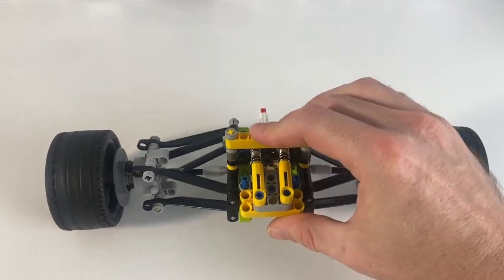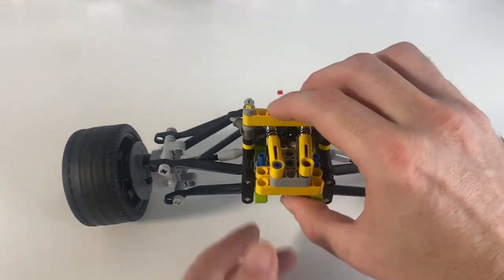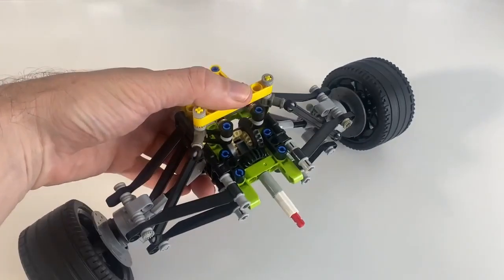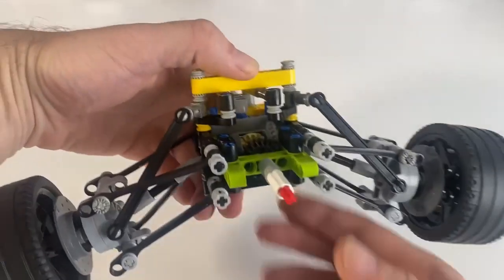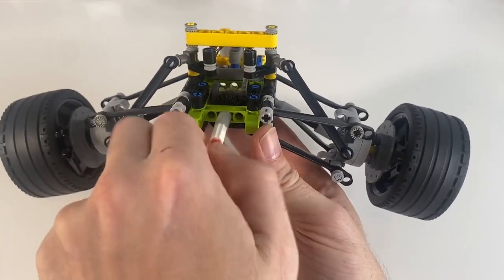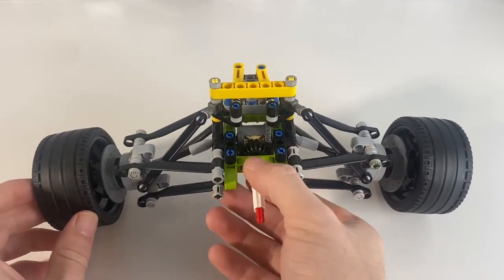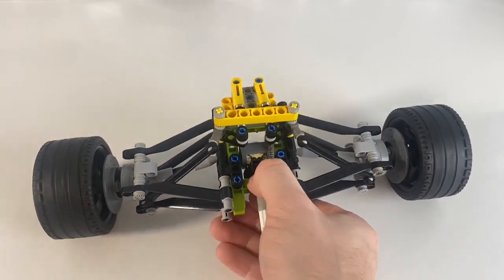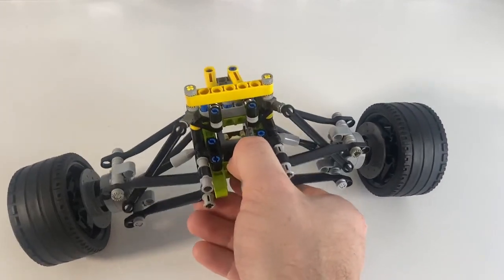That driveshaft connects through a differential to the wheels, so it will be set up to turn properly if you're going to build this into a vehicle with motors. The motor can connect directly to the driveshaft or through a gearing system if you wanted to add that in.